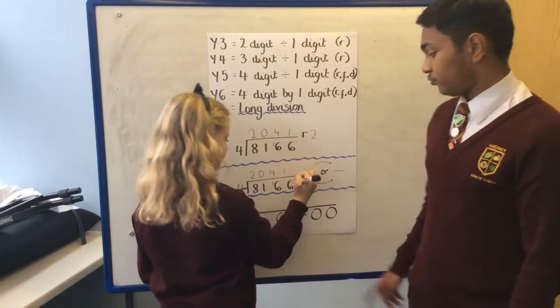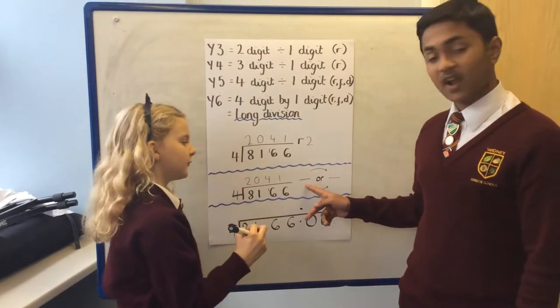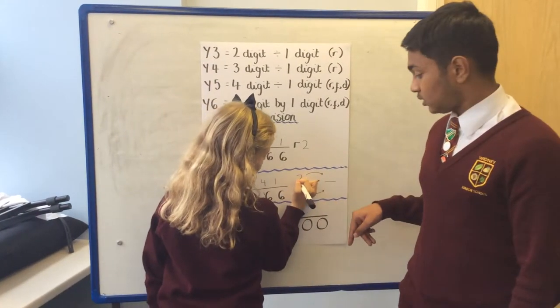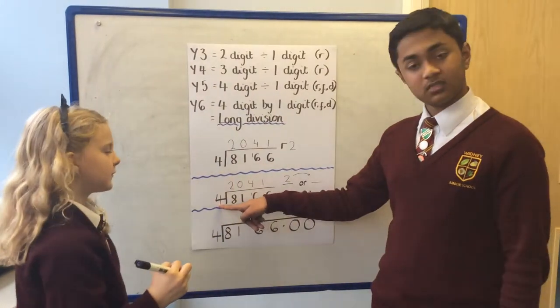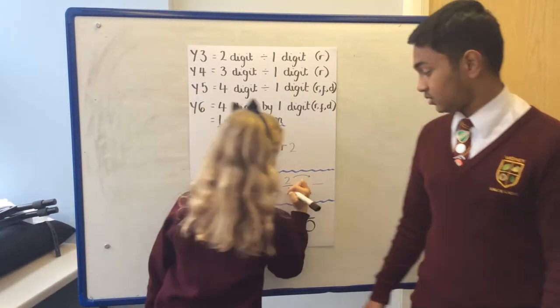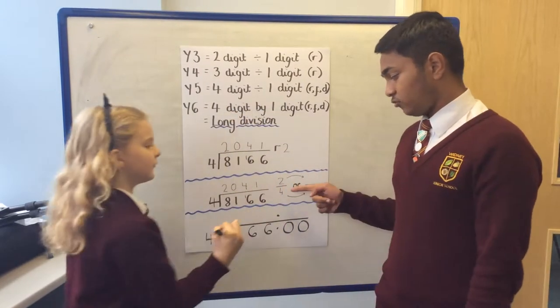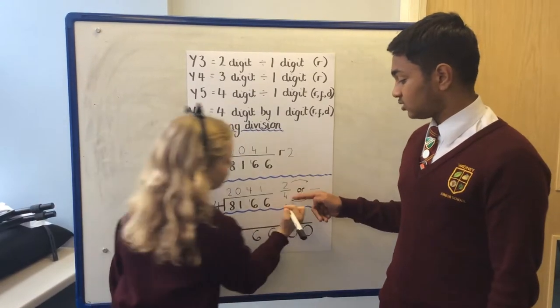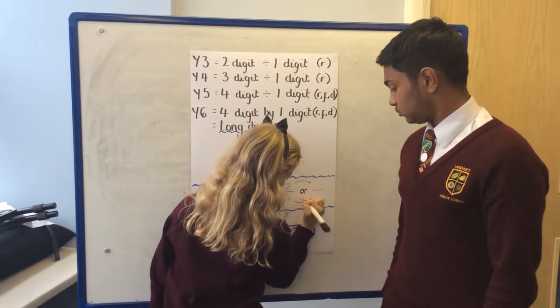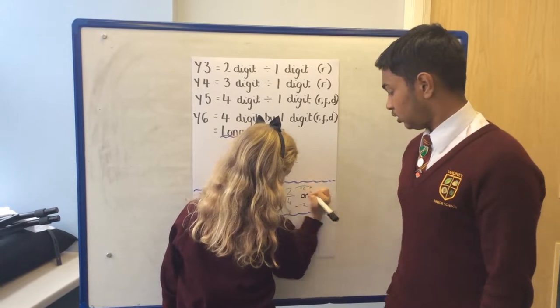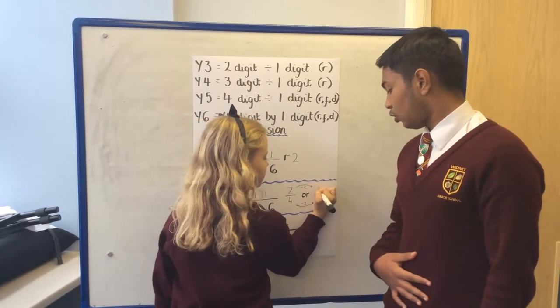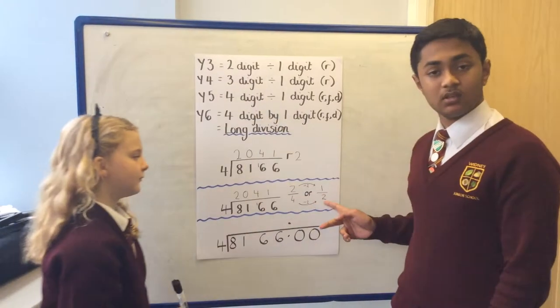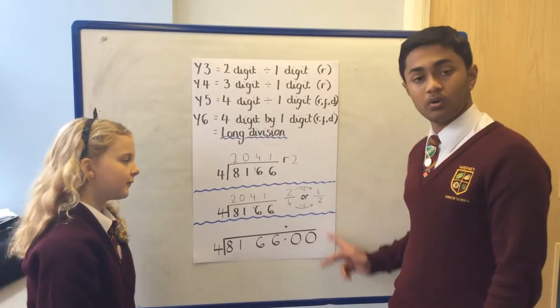And then when we put the remainder as a fraction, we have to put the remainder as the numerator and the number we're dividing by as the denominator. If you notice here, we can simplify this fraction if we divide each number by 2. 2 divided by 2 is 1, over 4 divided by 2 is 2. So 2 fourths is 2 quarters, but equivalent to a half.